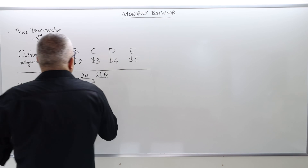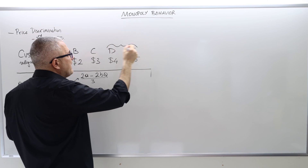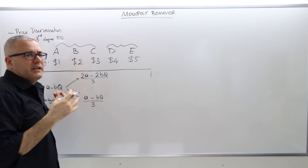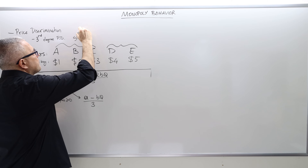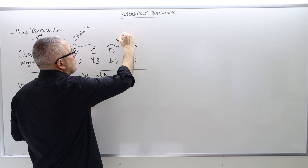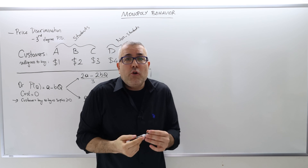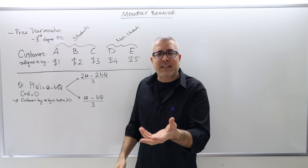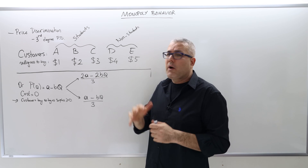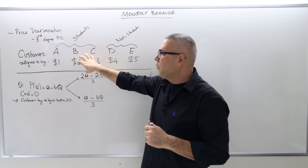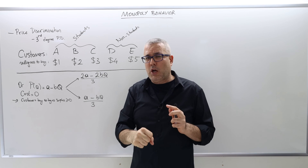However, as the seller I can classify customers into groups — some have higher willingness to pay than others as a group. In this model, customers D and E are in one group and A, B, and C are in another. Customers A, B, and C are students; D and E are professionals or non-students. I can ask for a student ID, and what I know is that students have lower willingness to pay and non-students have higher willingness to pay.